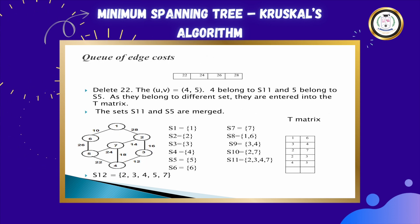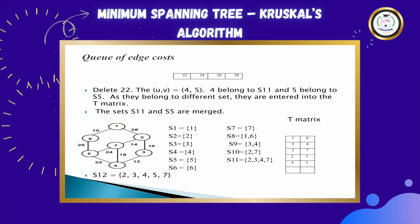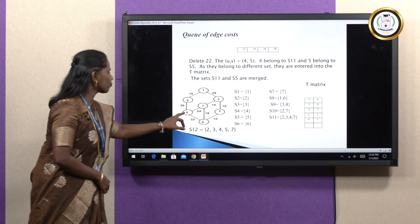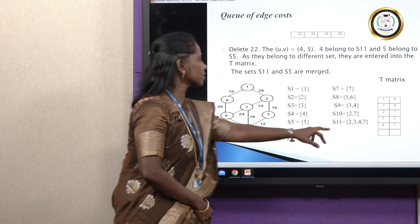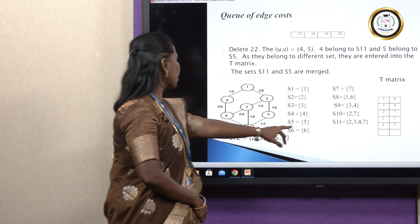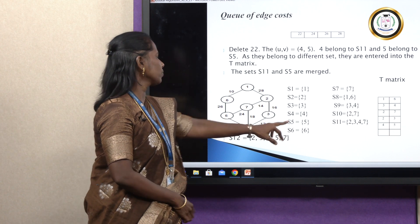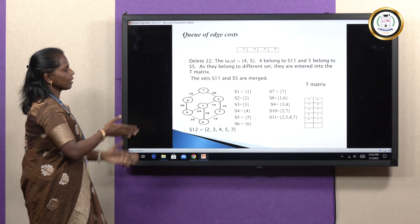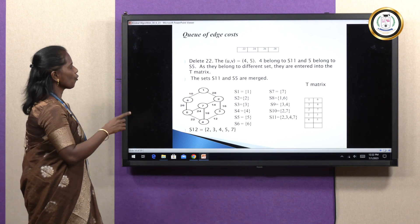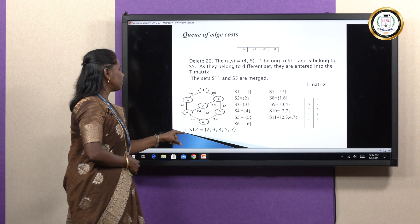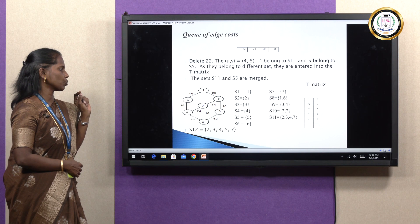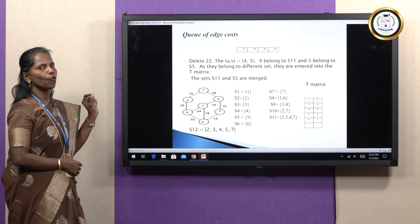Take the next value, 22. The nodes associated with 22 are 4 and 5. Check if 4 and 5 are in the same set or different sets. 4 is present in S11 and 5 is present in S5. Since they are in different sets, place them in the T matrix as (4, 5). After placing, merge S11 and S5 to get a new set S12 with values 2, 3, 4, 5, 7.